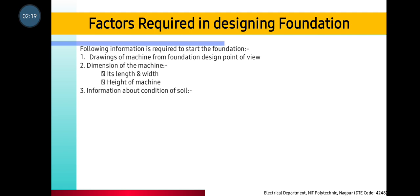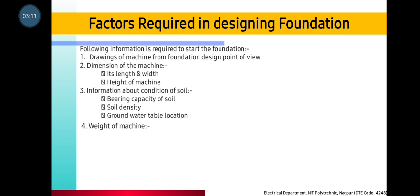Information about condition of soil — soil condition, bearing capacity of soil — because you can use the material for the foundation to build, and where you can build the foundation. It will be soil on the top, then cement, then foundation block, then the motor on top. So you have to see the soil bearing capacity, soil density, how deep it is, and the ground water table location.